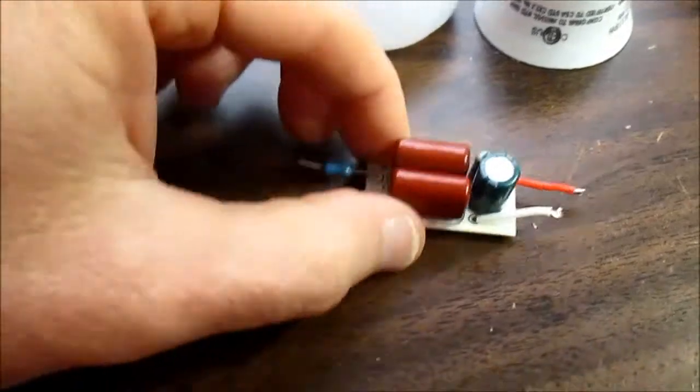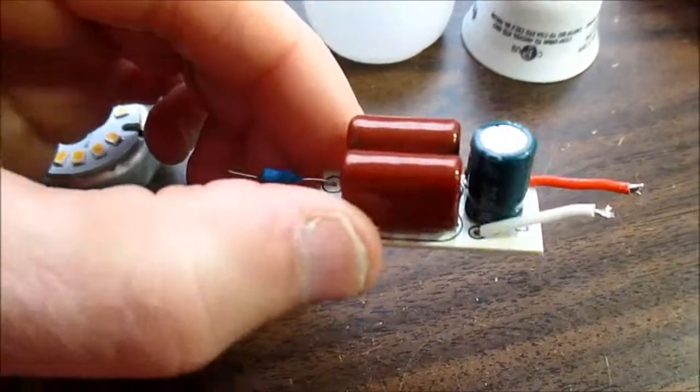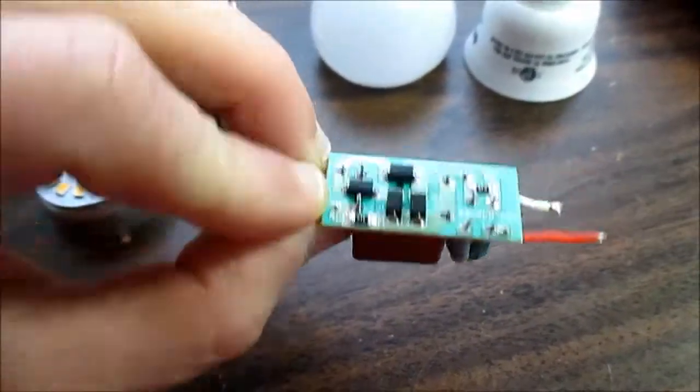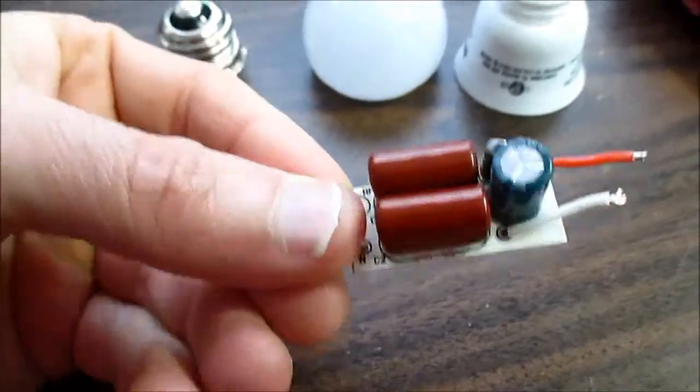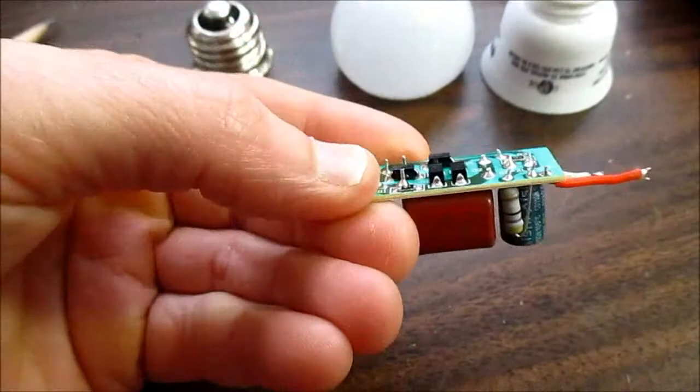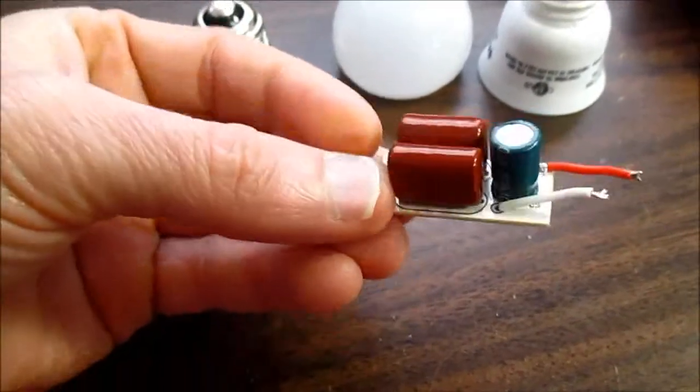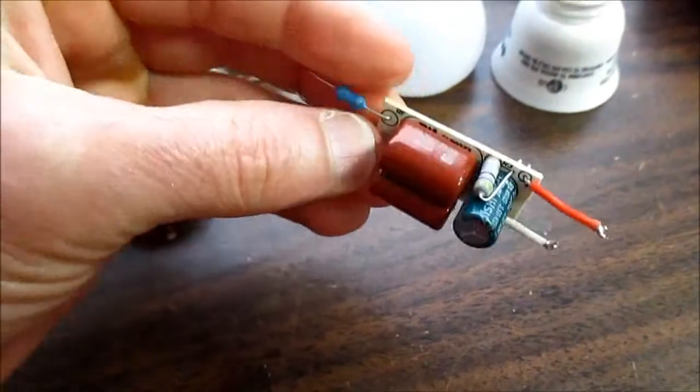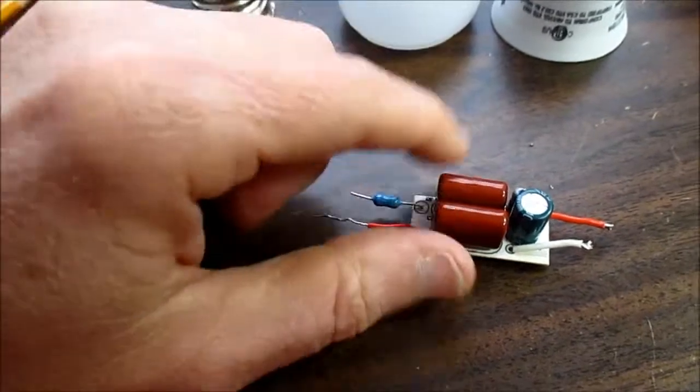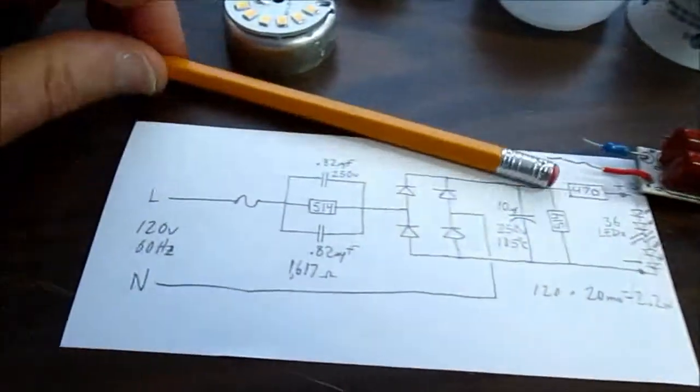And here's the driver board. It has the through-hole components on one side and the surface mount on the other side. You don't see any transistors or integrated circuits. It's all more of a passive type design. It uses what's known as a reactive type current limiter using capacitors.